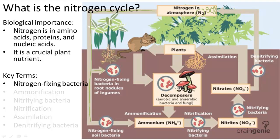The first place it can be found is in particular types of plant roots, and these bacteria allow these plants to directly utilize nitrogen as a nutrient for growth. The second place nitrogen-fixing bacteria can be found is in the soil, and these nitrogen-fixing bacteria perform a process called ammonification, which turns N2 into NH4+, otherwise known as ammonium.